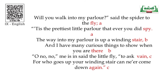Come to the fourth line; the last word 'there' is rhyming with 'stair,' so you write the same B. Come to the fifth line; the last word is 'vain' — not rhyming with 'fly' or 'stair,' so mark it C. Come to the last line; the last word is 'again,' which is rhyming with 'vain.'